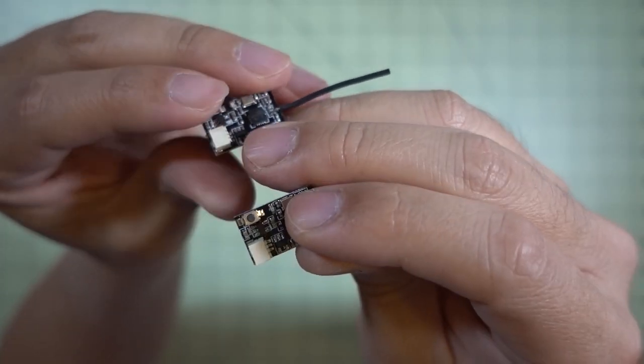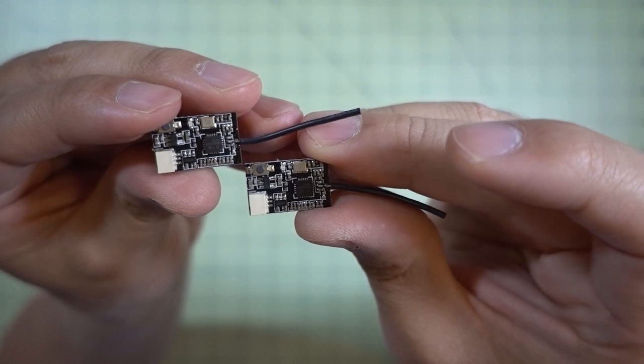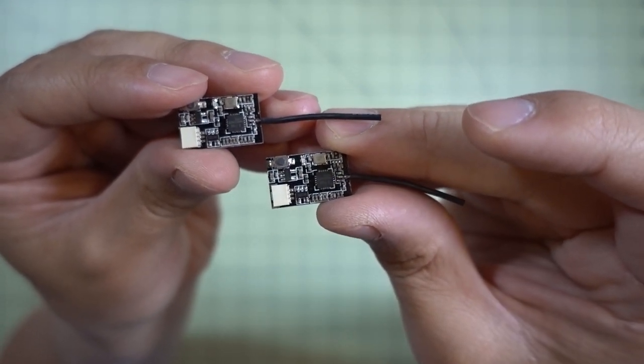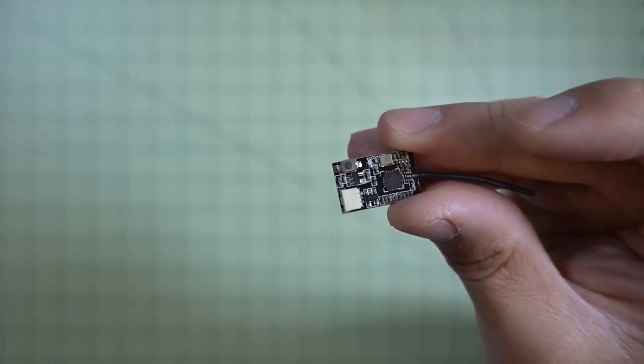The most important thing that I just failed to mention earlier in this video is that this new receiver is two-way capable. So you can bind this with your Turnigy Evolution, just like the Flysky FS-A8S receiver.